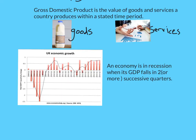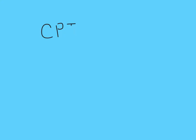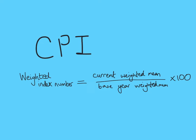We'll do an example in a minute, but we just need a formula. The CPI is weighted to reflect the importance of different items in a shopping basket, and this changes every year to reflect changes in what people spend their money on. The weighted index number is the current weighted mean price divided by the base year weighted mean price, times 100. This is basically the new over the original times 100 — it's GCSE percentage change, remembering that index is about percentages but without the percentage sign.